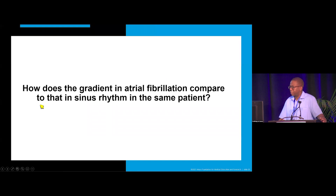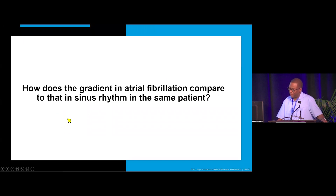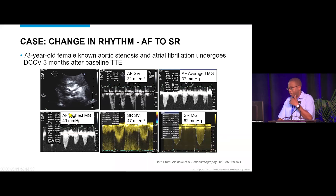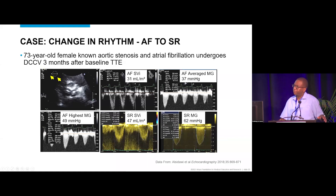To compare gradients in AFib versus sinus rhythm in the same patient: we have imaged some patients during a change in rhythm — once in AFib and another time in sinus rhythm. A 73-year-old female with known aortic valve stenosis and atrial fibrillation underwent cardioversion three months after baseline transthoracic echocardiogram. At baseline, the valve appeared heavily calcified.